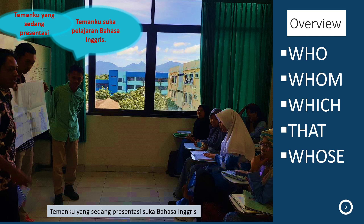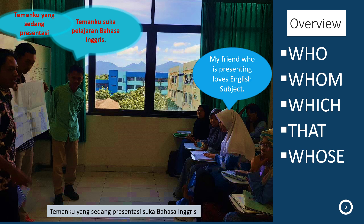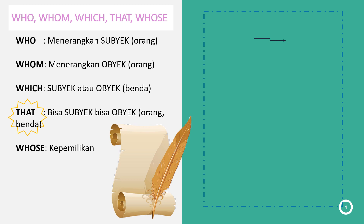Kalau mau disatuin 'temanku suka pelajaran bahasa Inggris' dengan 'temanku yang sedang presentasi,' jadinya: 'My friend who is presenting loves English subject.' Who-nya di situ adalah 'yang' — yang sedang presentasi, suka pelajaran bahasa Inggris. Bisa juga diganti dengan 'that': 'My friend that is presenting loves English subject.' Tapi untuk orang, lebih sering pakai 'who' untuk subjek.